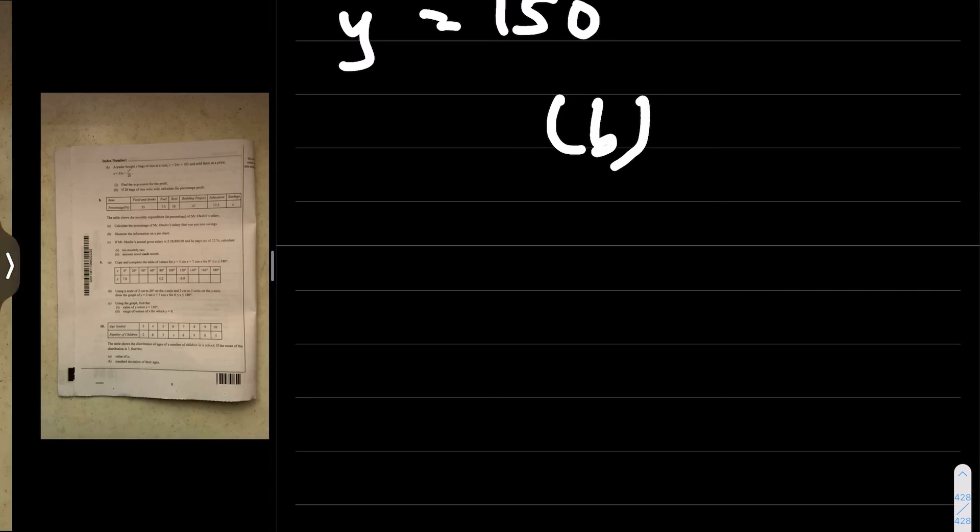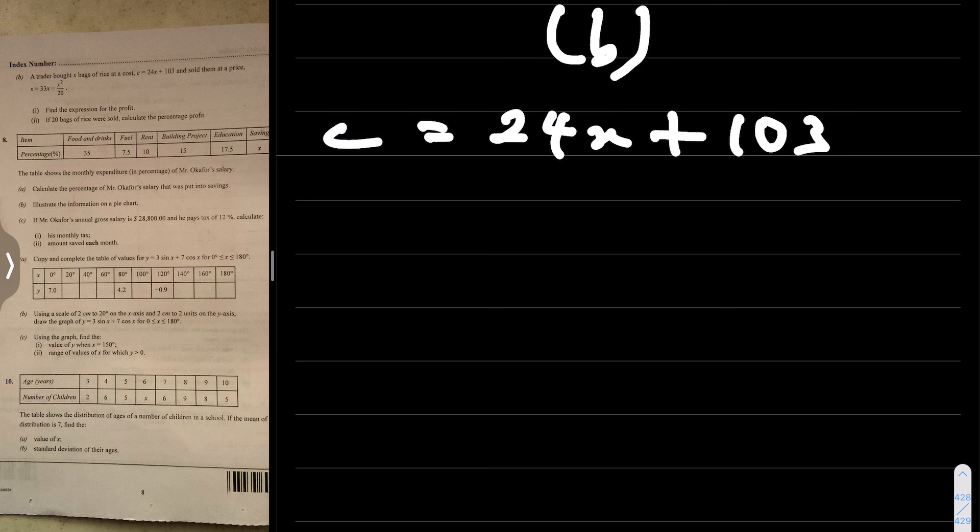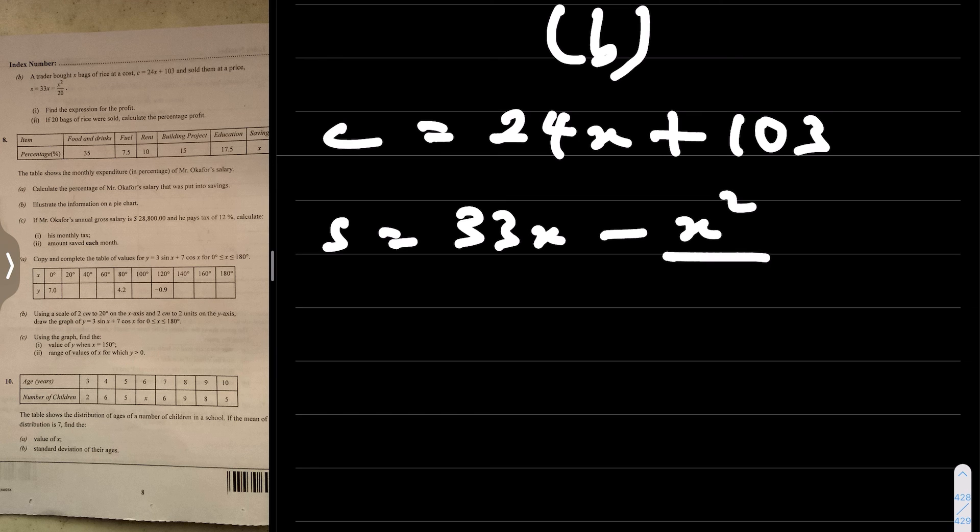Now we go to the next question, which is 7b. A trader bought x bags of rice at a cost c equals 24x plus 103, and sold them at a price s equals 33x minus x squared over 20. So cost price c is 24x plus 103, and selling price s is 33x minus x squared over 20.